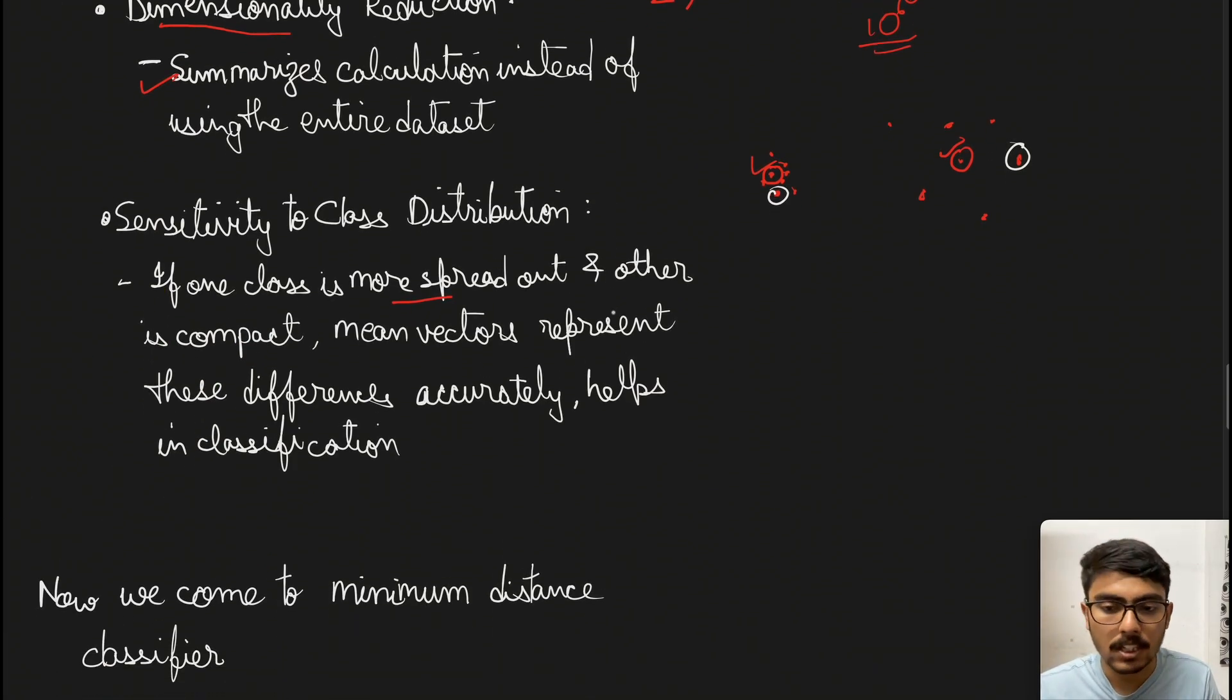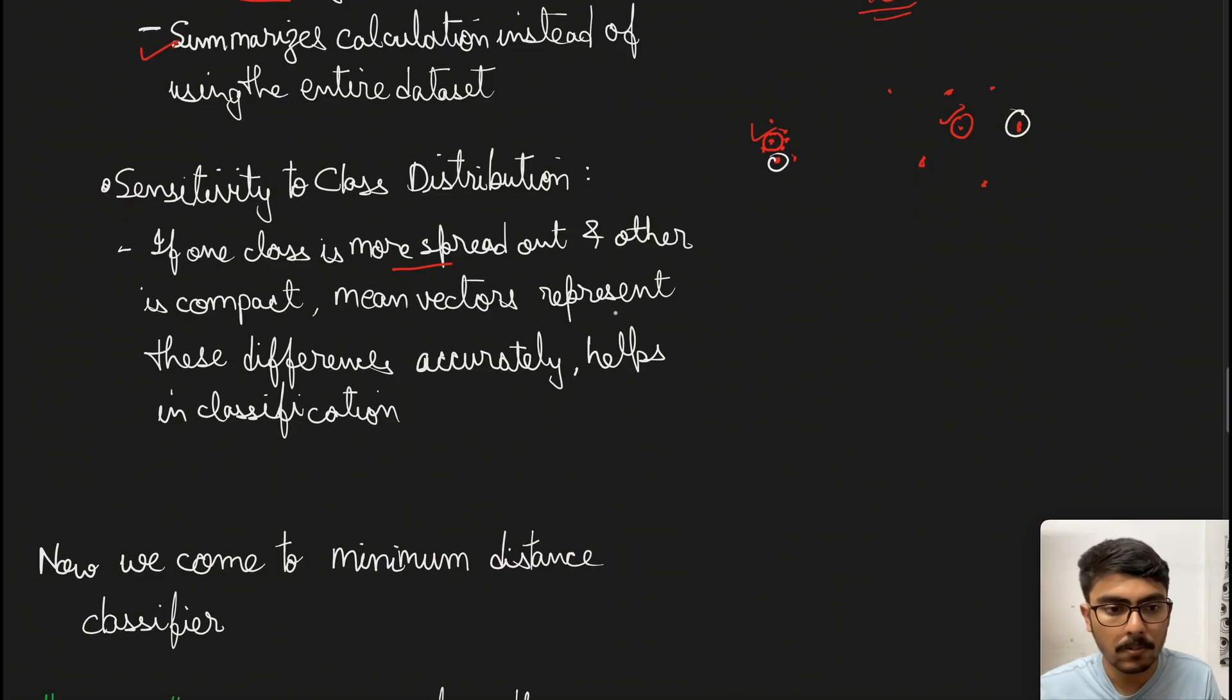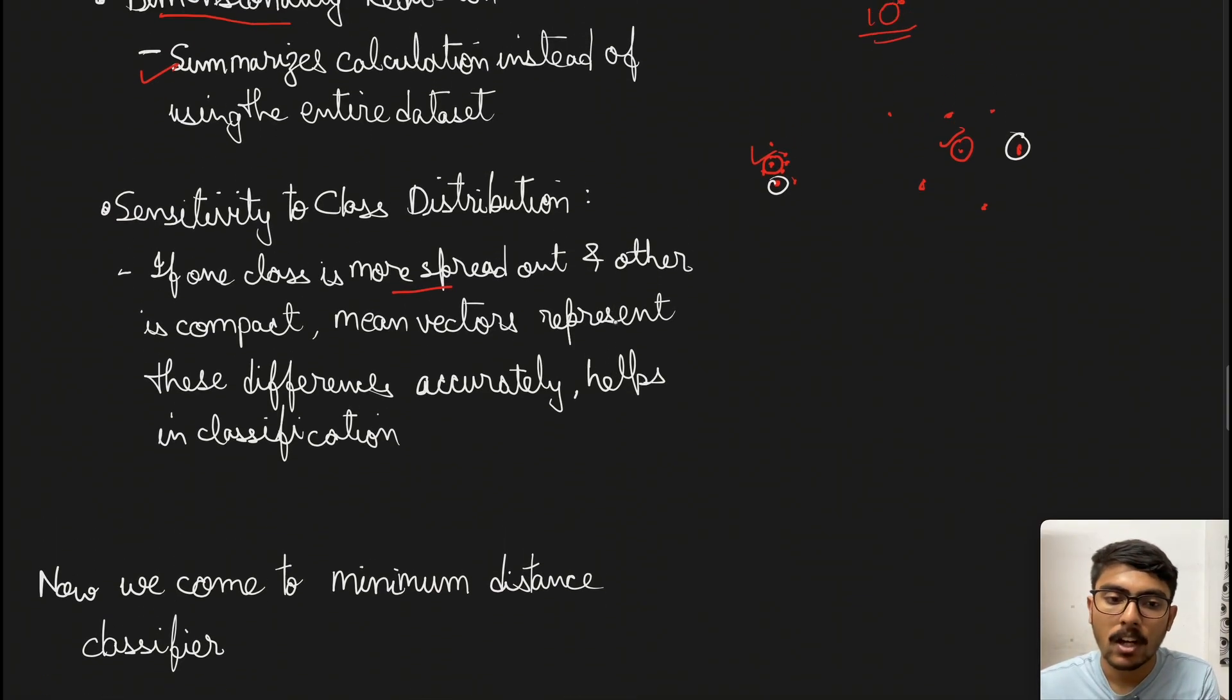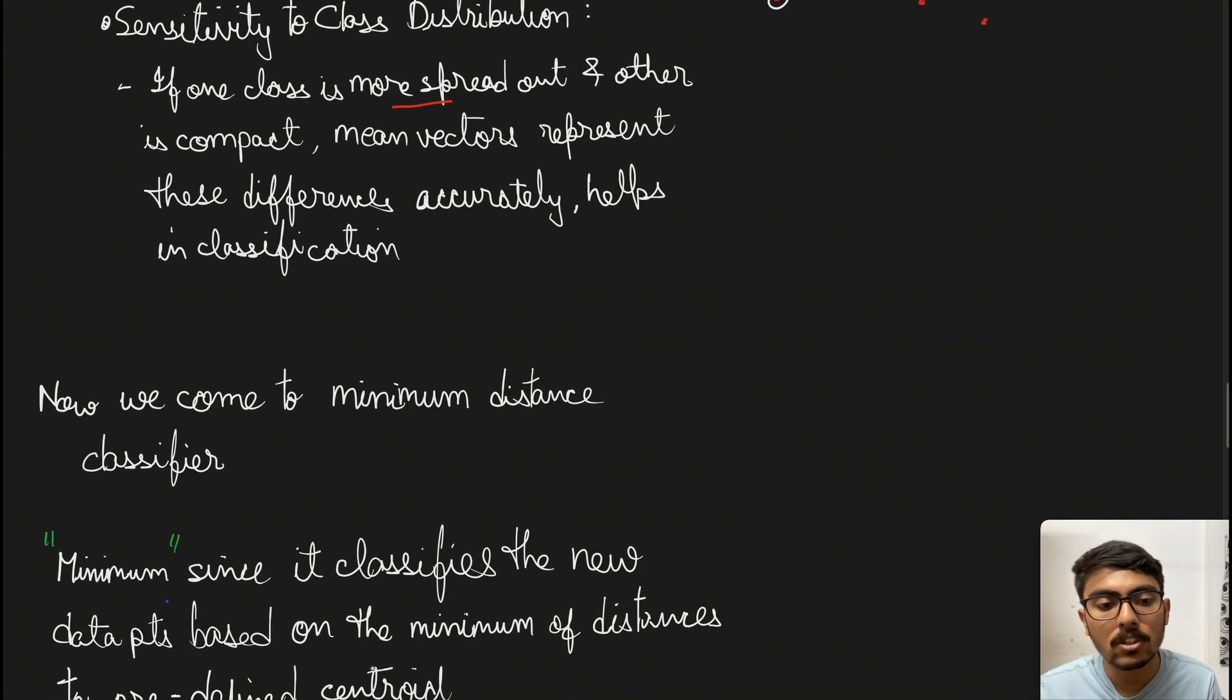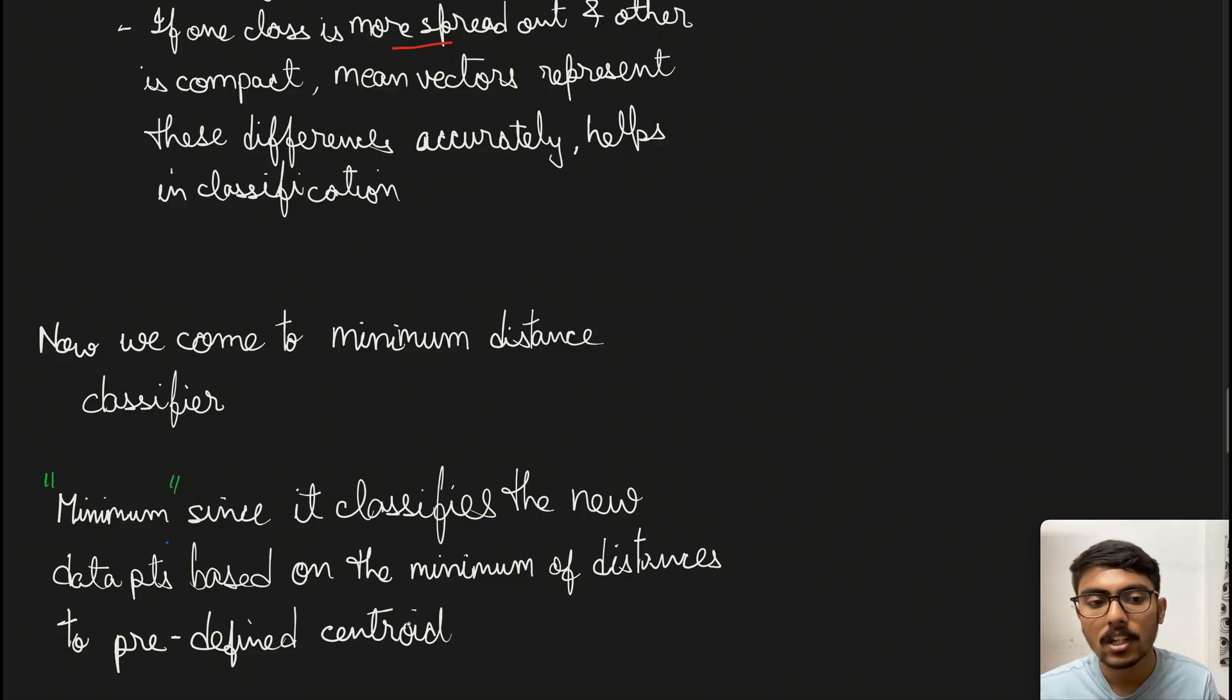Now we'll come to minimum distance classifier, which is the topic. Why is it called minimum? Minimum distance denotes it classifies new data points based on the minimum distances to the predefined centroid. When we have a new data object, we classify it based on the minimum of the distances to the predefined centroids - the predefined means we talked about.